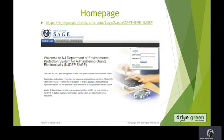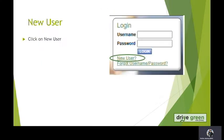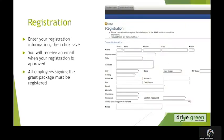The first thing we will need to do is set yourself up with a login. You're going to click on New User and then enter your registration information: your name, title, address, city, county, zip code, contact information, and then set yourself up with a username and password.